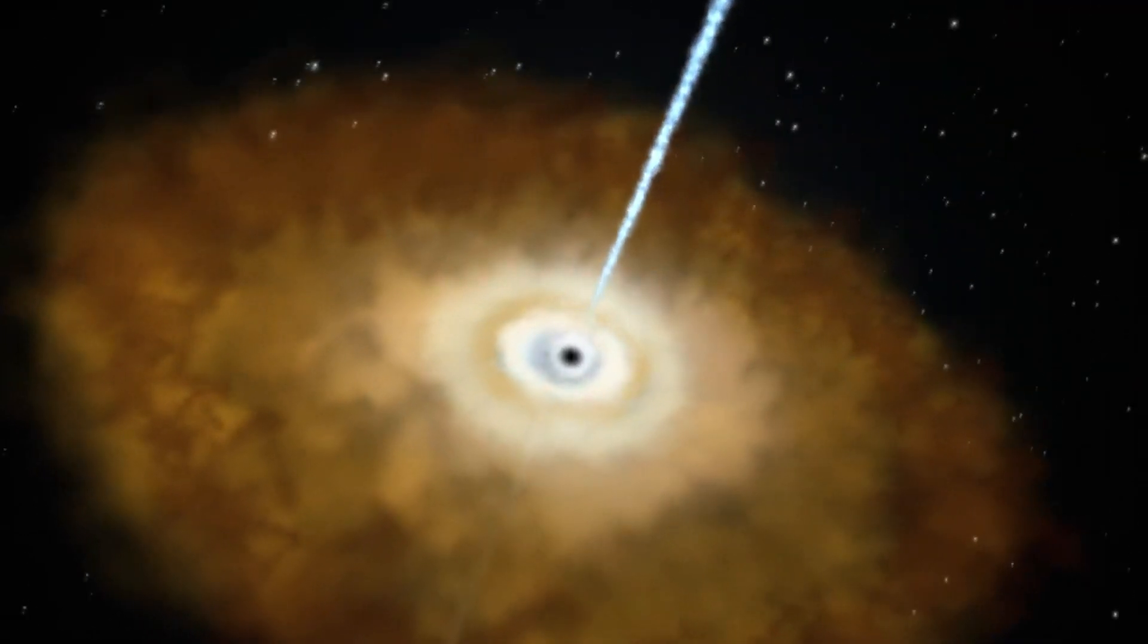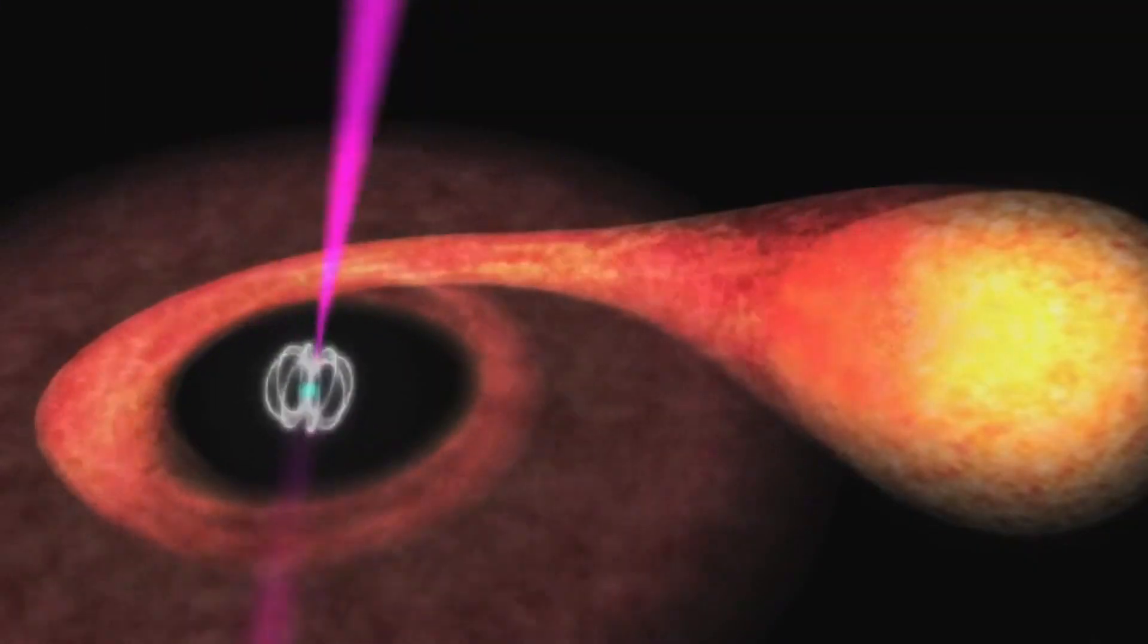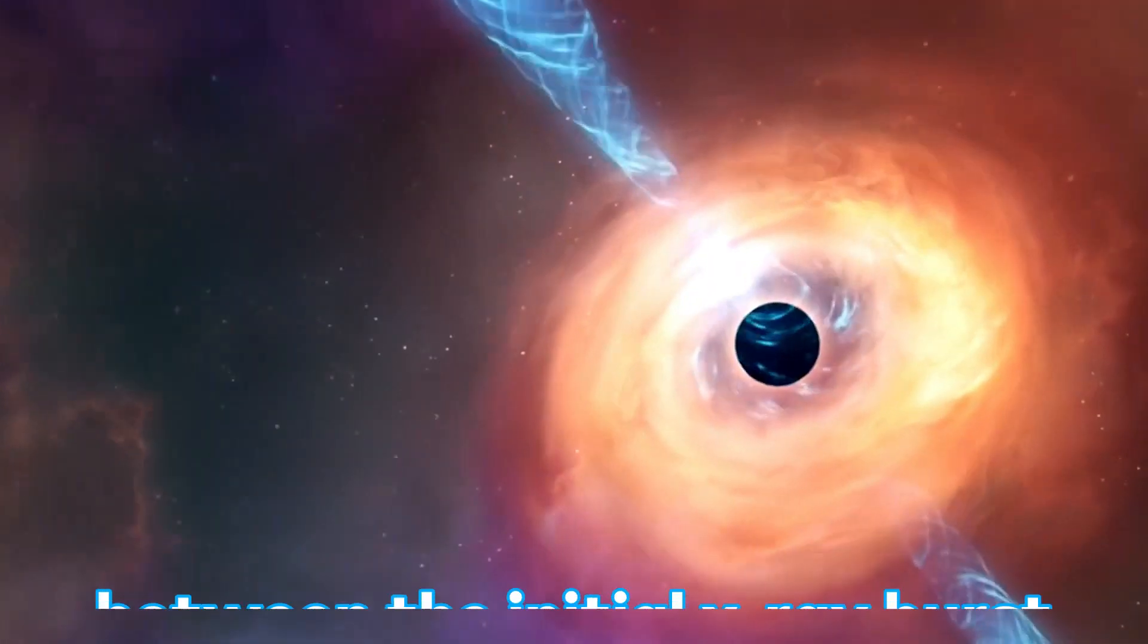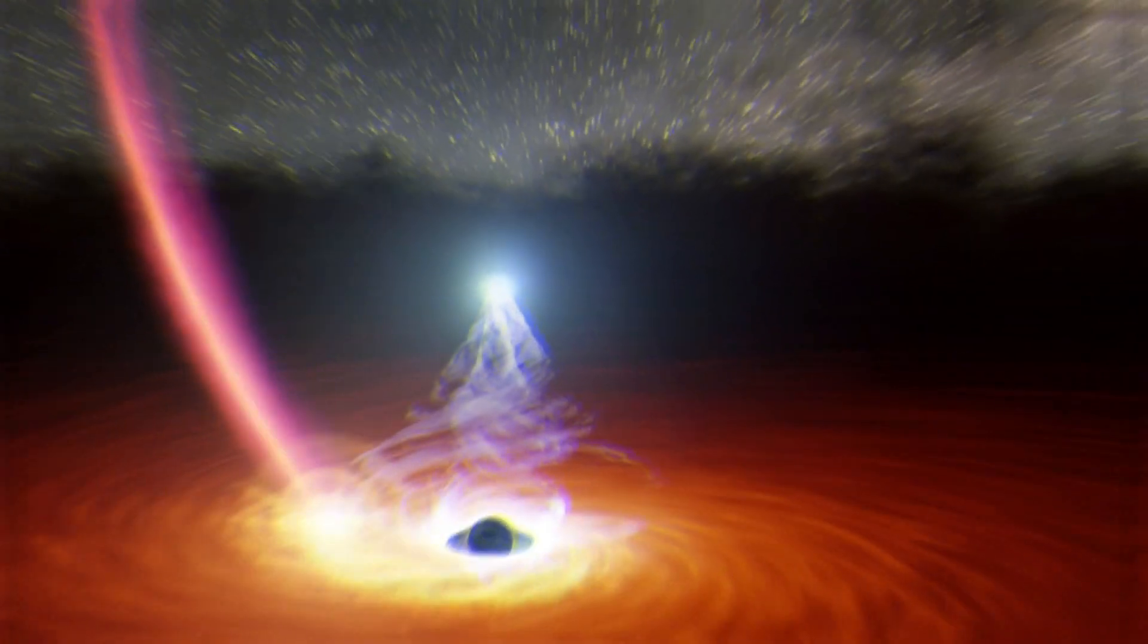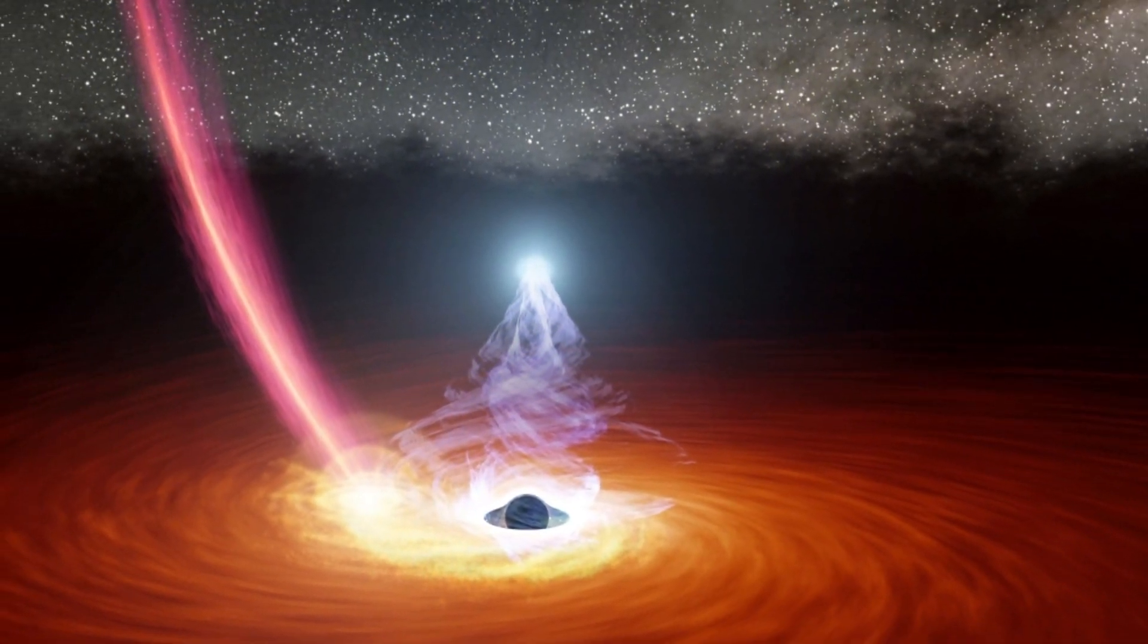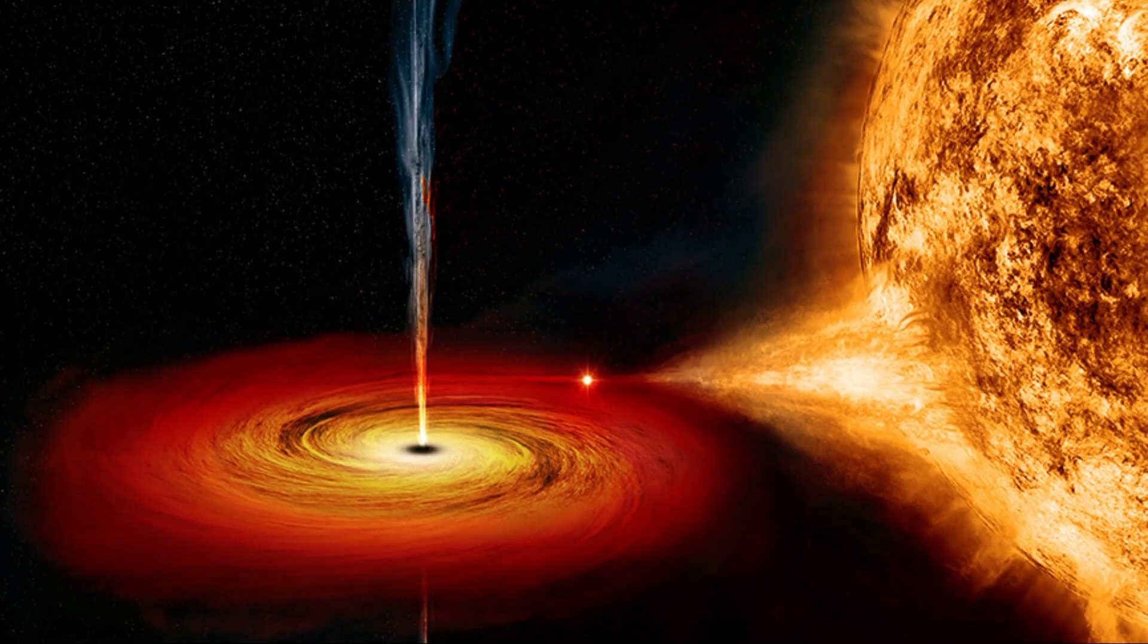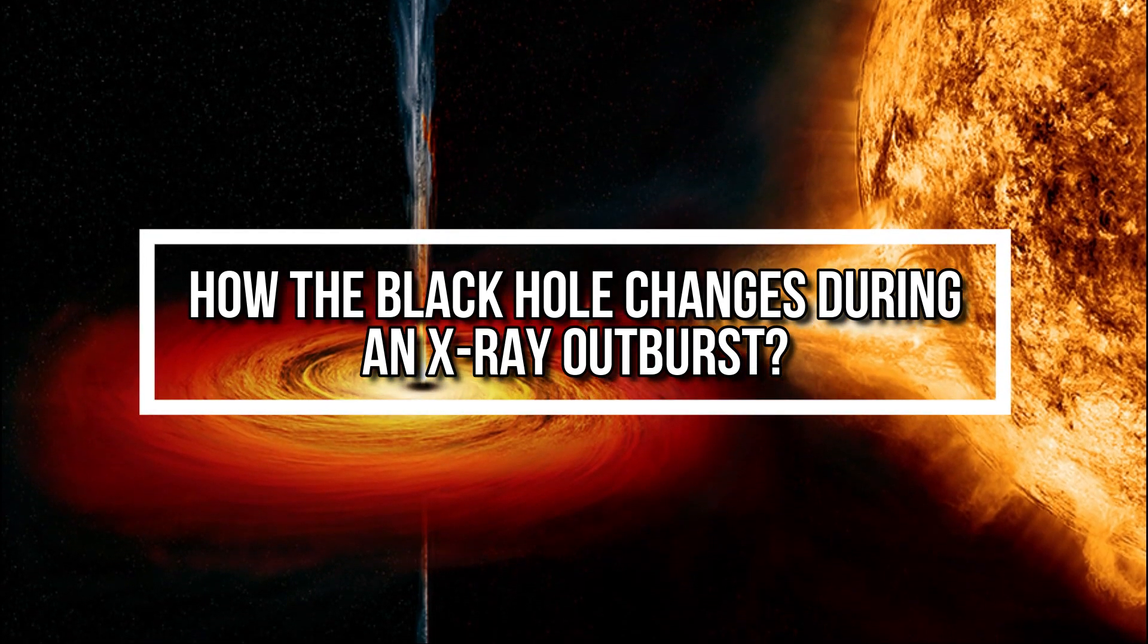After observing these x-rays, scientists grouped the data from 10 x-ray-emitting binary systems into categories based on similar time intervals between the initial x-ray burst and the echoed light. As a result, they were able to track the changes in the x-rays' echoes and develop a basic understanding of how the black hole changes during an x-ray outburst.